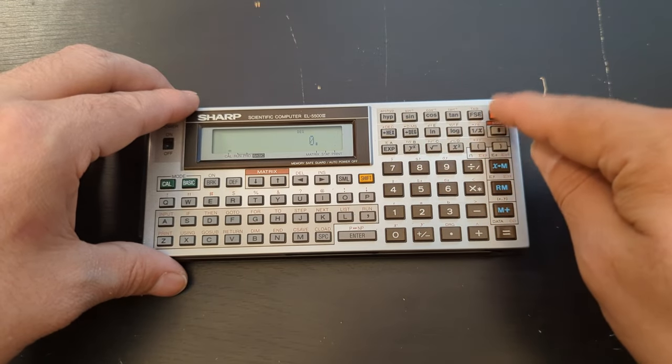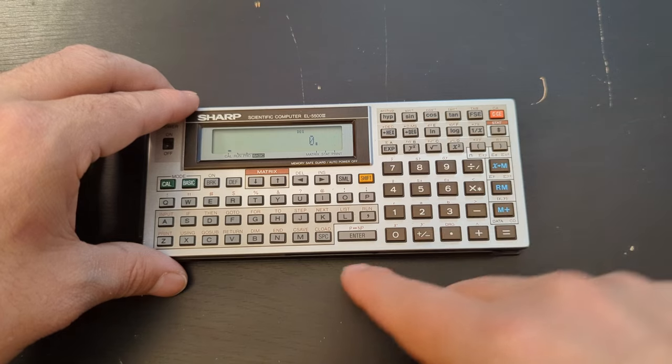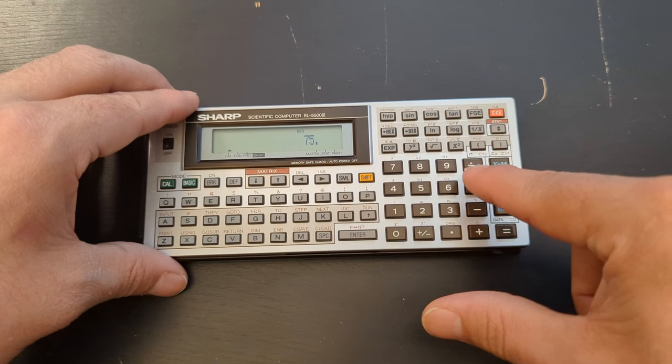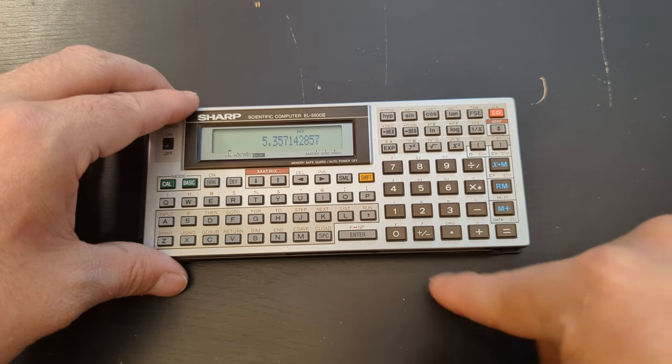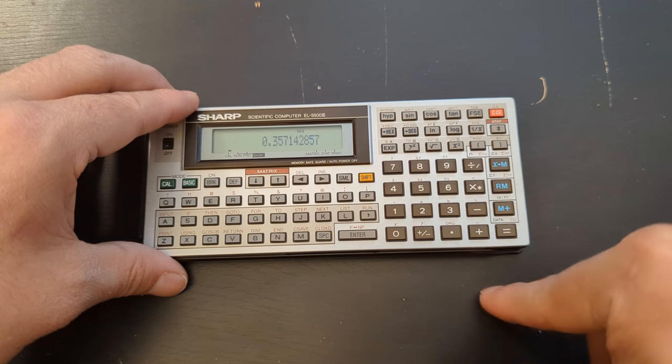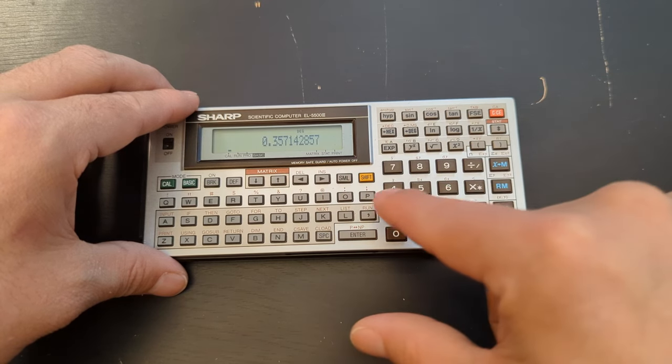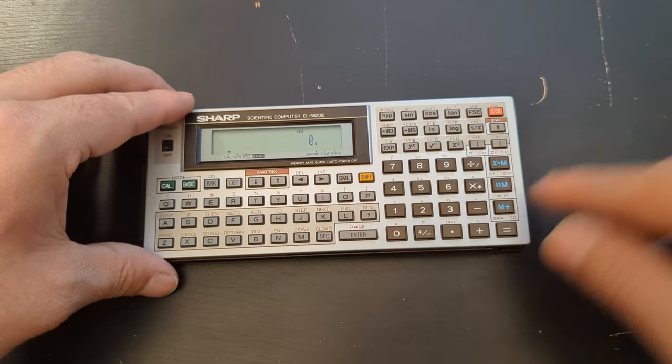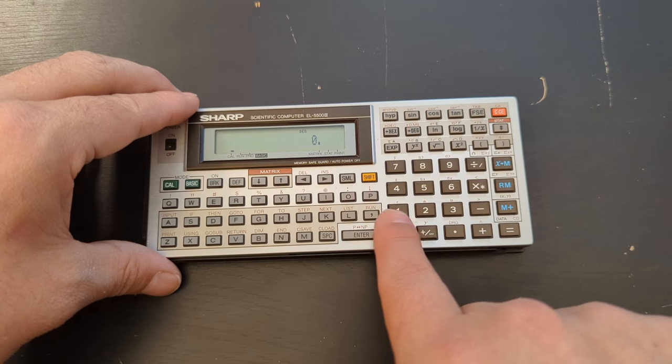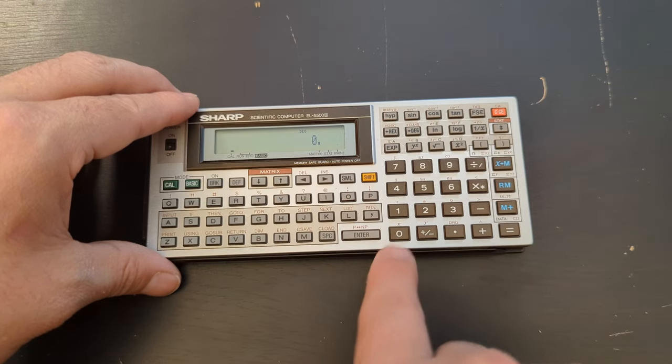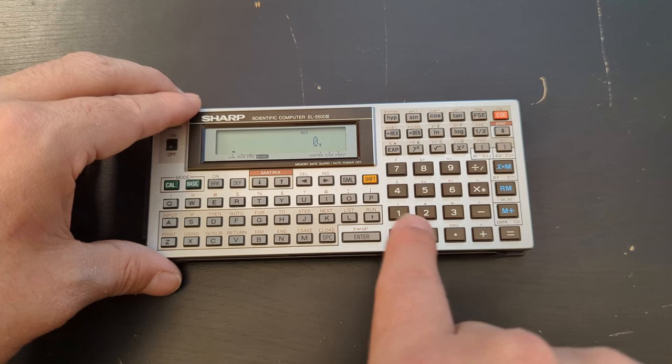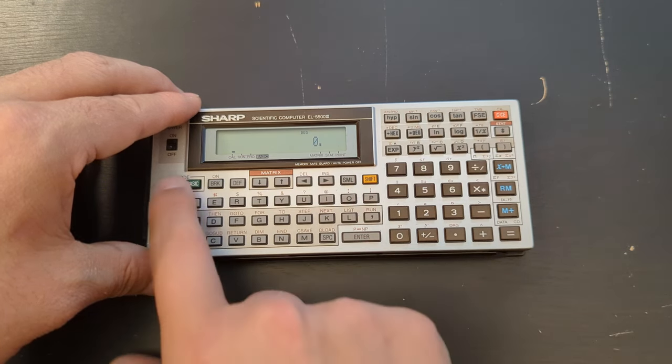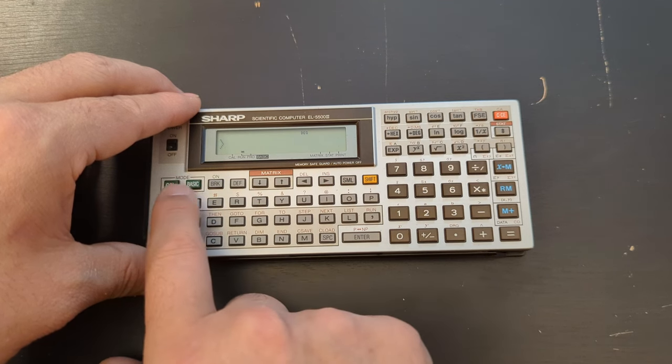But as prescribed in the book we get the intermediate results by hitting the equals and that of course gives us the rounding error there. So we have that one, it didn't like zero to the power of zero, gave us an error. And then I guess we can go check the speed test on it.